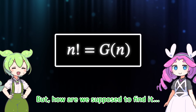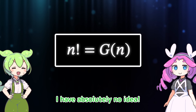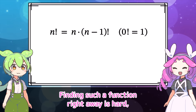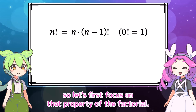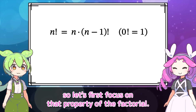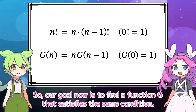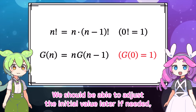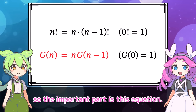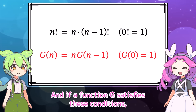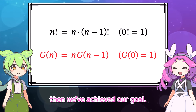But how are we supposed to find it? I have absolutely no idea. Finding such a function right away is hard, so let's first focus on that property of the factorial. The factorial had this property, so our goal now is to find a function g that satisfies the same condition. We should be able to adjust the initial value later if needed, so the important part is this equation. If a function g satisfies these conditions, then g of n equals n factorial.